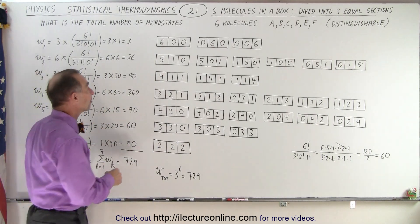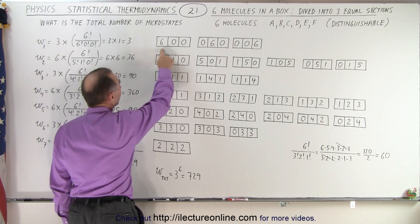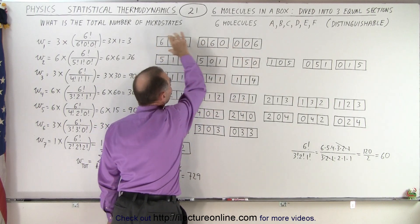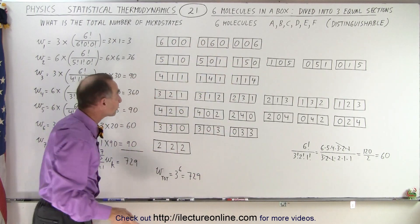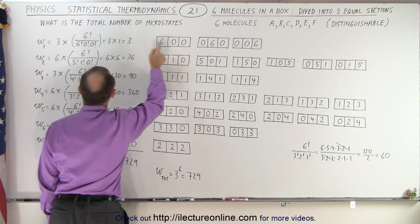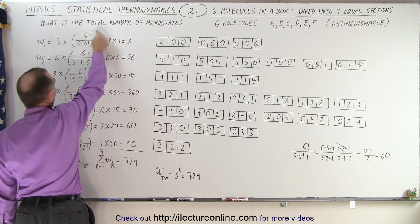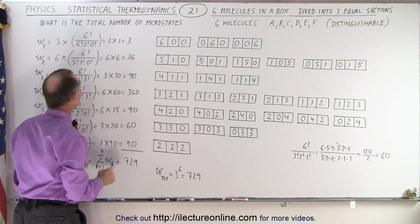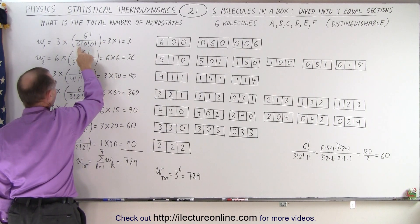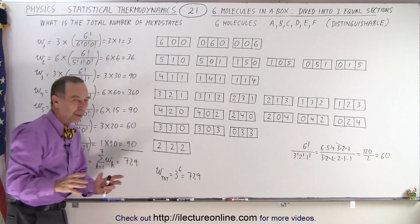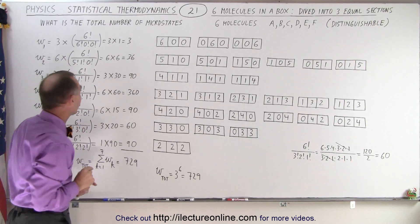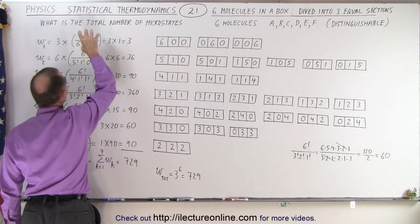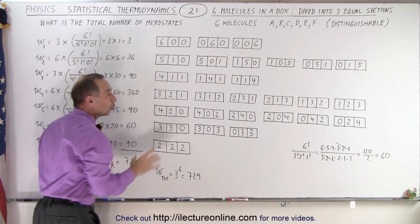These are the various possibilities we have. We can have six in one section and zero in the others, written as (6,0,0), or (0,6,0), or (0,0,6). For each one of these situations, we use the equation six factorial divided by six factorial, zero factorial, zero factorial. Since zero factorial equals one, each gives one microstate, and we have three different situations, so three total microstates.